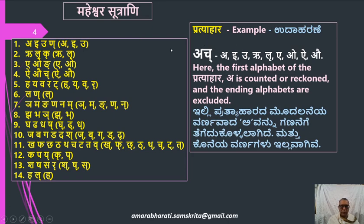First example: Ach. The letter A is the first letter of the first sutra, and Ch is the last letter of the fourth sutra. The first alphabet of the Pratyahara, A, is counted, and the marker alphabets are excluded.